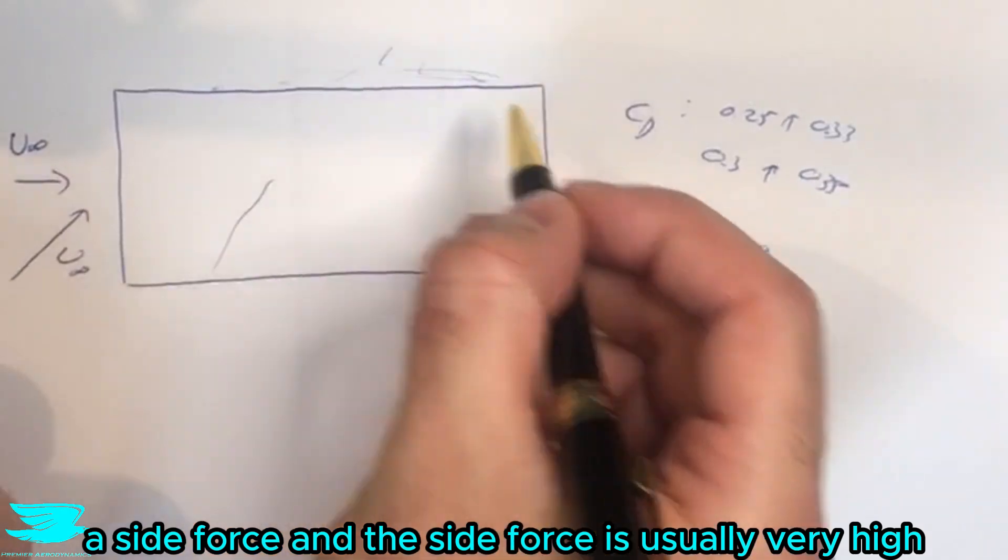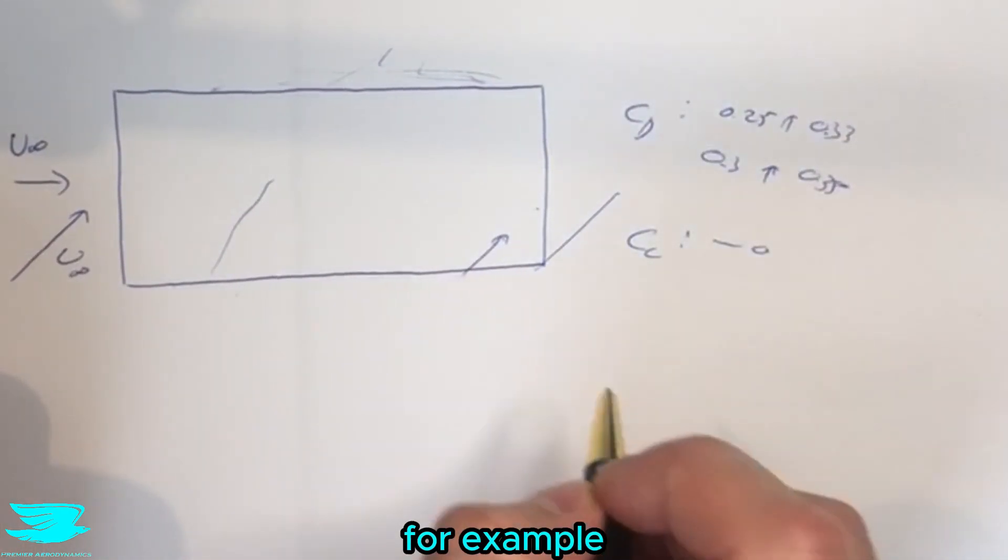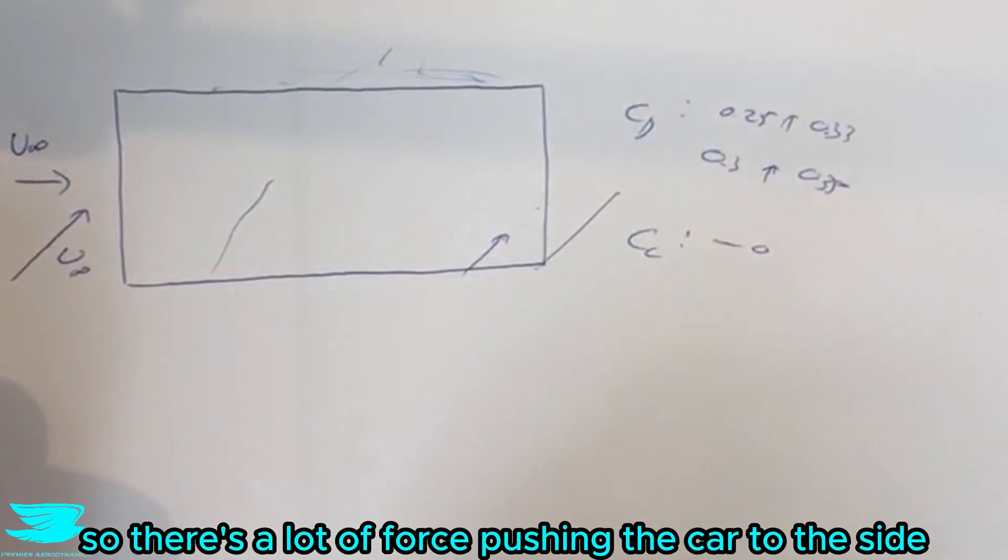And also there is the side force, and the side force is usually very high so you might get a side force coefficient of about 0.4 for example. So there's a lot of force pushing the car to the side.